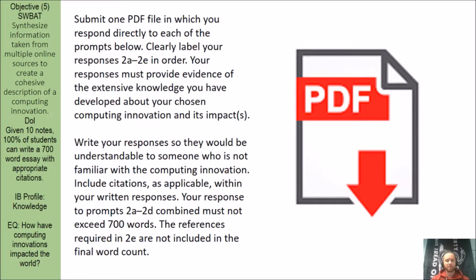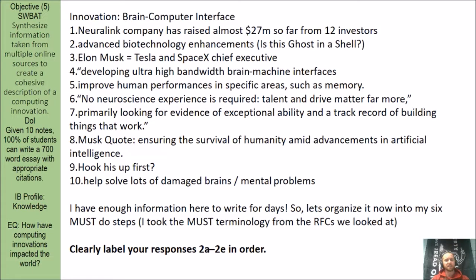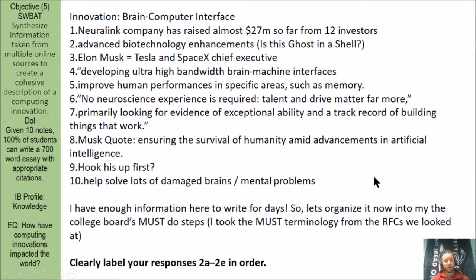So let's think about what we've done so far. Each Friday we've done research on a brand new innovation — for example, the brain-computer interface — where I had you jot down 10 notes from an article and then use those notes to make a determination as to whether it's overall a good or bad thing. Now let's take that and organize it into the College Board's must-do steps — just like that word MUST appears in all caps in RFCs. Put this information into a format that the College Board will appreciate and label each part 2A through 2E.